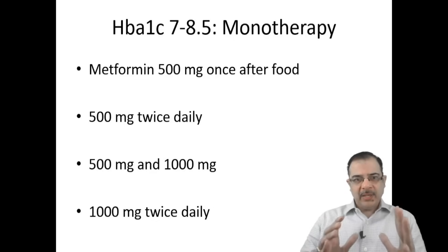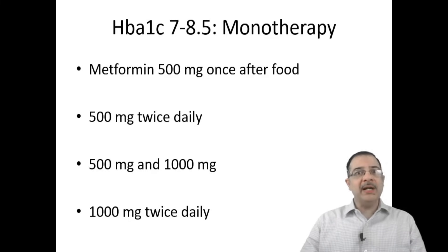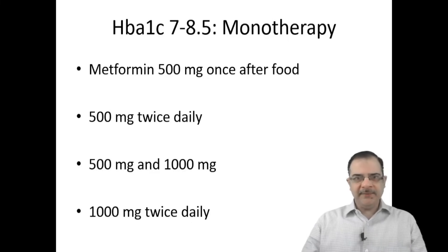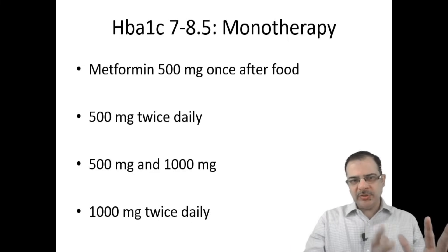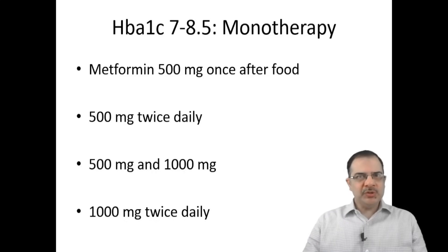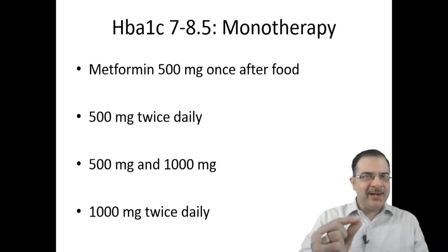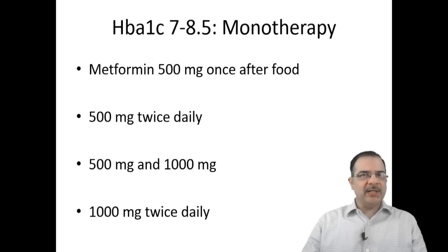Even after metformin 1000 mg twice a day, if glycemic control is not achieved, you should move to double therapy. If control is achieved, continue with 1000 mg twice daily and repeat HbA1c after two to three months. If HbA1c comes well under control — below 6.5 — try to reduce doses gradually. This should be the protocol.